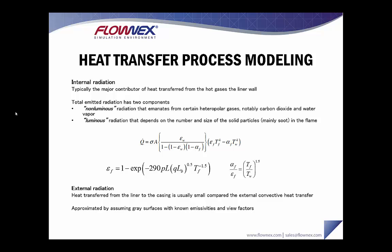Internal radiation — that is radiation from the hot combustion gases — is typically a major contributor of heat transfer from the hot gas to the liner wall. Total emitted radiation typically has two components, both of which can be implemented in Flownex: non-luminous radiation that emanates from heteropolar gases, notably carbon dioxide and water vapor, and luminous radiation that depends on the number and size of solid particles, mainly soot, in the flame. External radiation refers to heat transfer from the liner to the casing. It is usually small compared to external convection and is approximated by assuming grey surfaces with known emissivities and view factors.